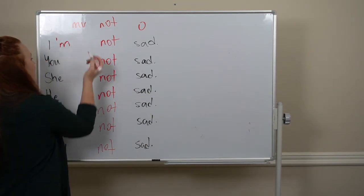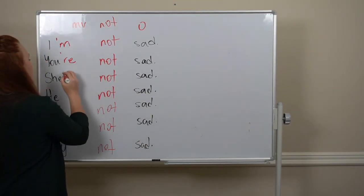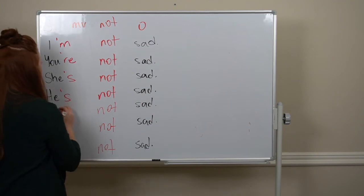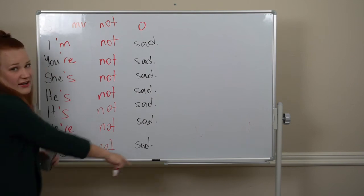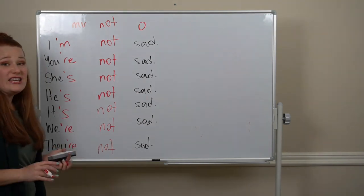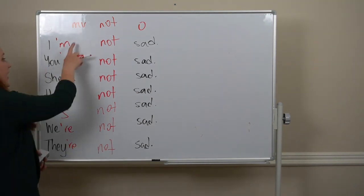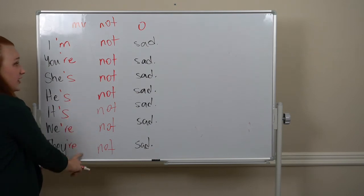I'm not sad. You're not sad. She's not sad. He's not sad. It's not sad. We're not sad. And they're not sad. Those 'to be' contractions we already learned: I'm, you're, she's, he's, it's, we're, they're.